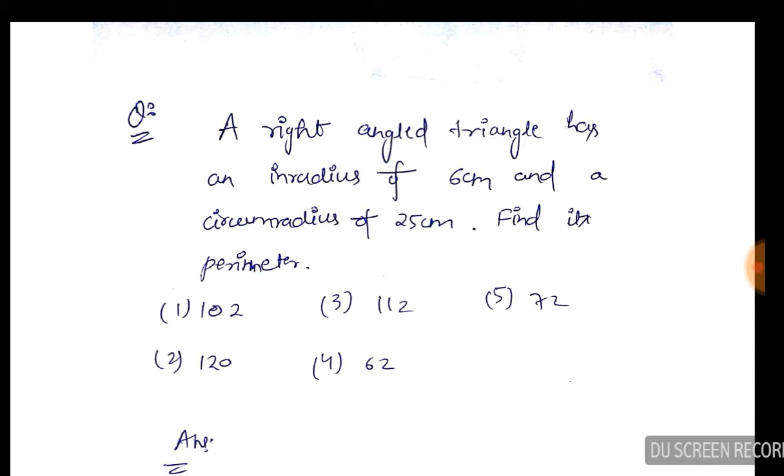The question is that I have a right angle triangle, 90 degrees. Inradius means that the inside circle is 6 cm, and circumradius is 25 cm, so small r is 6 and capital R is 25 cm. I have to find the perimeter of the triangle.